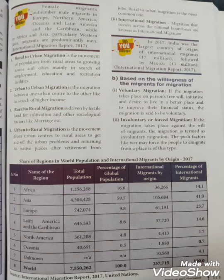The next type is Rural to Urban Migration. The reasons include employment, education, and recreation facilities. Urban to Urban migration is driven by higher income. Rural to Rural migration relates to cultivation of land and marriage. Urban to Rural migration means returning to the native place. International Migration means moving across national boundaries.